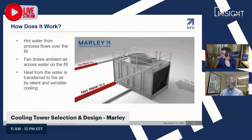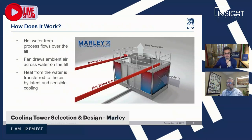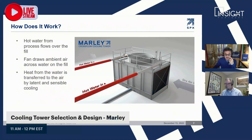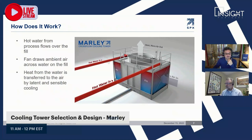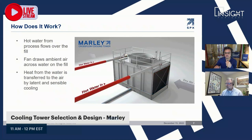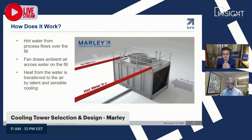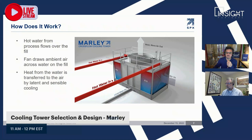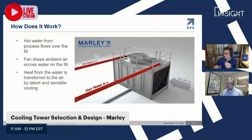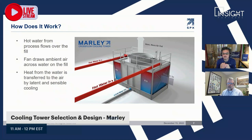How does the cooling tower itself work? You've got hot water coming from your process that gets distributed over our heat exchange media, which we call fill. At the same time, a fan draws cool, dry air into the unit. That air picks up heat and moisture, and then the fan discharges that moist, warm air at the top. Cold water is collected at the bottom of the tower in our collection basin and sent back to your process.